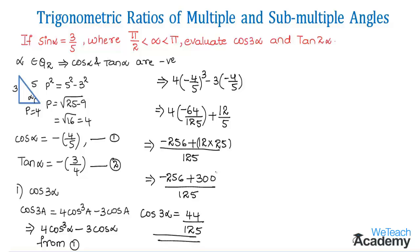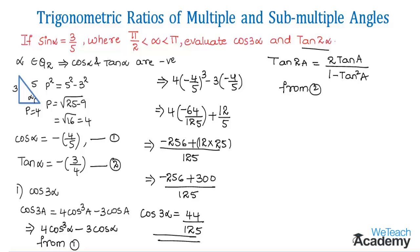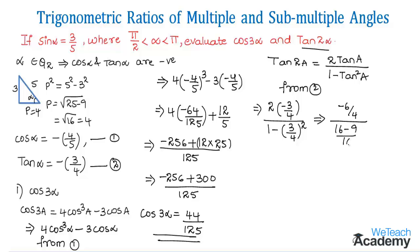Now let us evaluate the value of tan 2α. Using the multiple angle formula: tan 2a = 2tan a / (1 − tan²a). Substituting tan α = −3/4 from equation 2: tan 2α = 2(−3/4) / (1 − (3/4)²) = (−6/4) / (1 − 9/16).